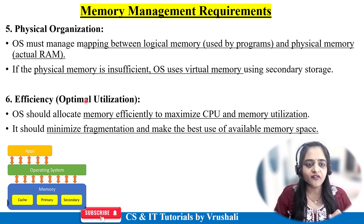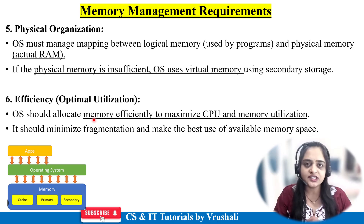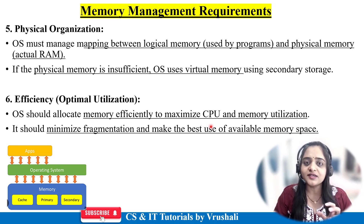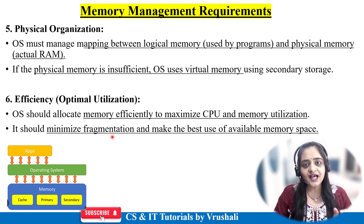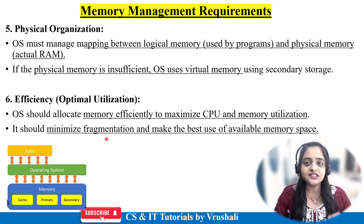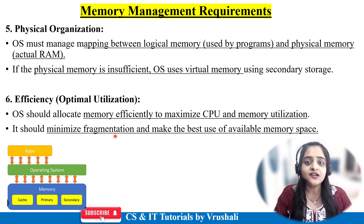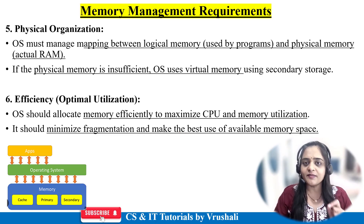The last memory management requirement is efficiency. The operating system allocates proper memory to each and every process for execution, ensuring efficient and maximized CPU and memory utilization. It also minimizes fragmentation — which basically means wastage of memory. The OS ensures less wastage and efficient use of memory for execution. These are the memory management requirements followed by the operating system.